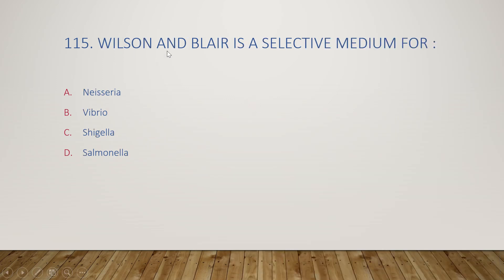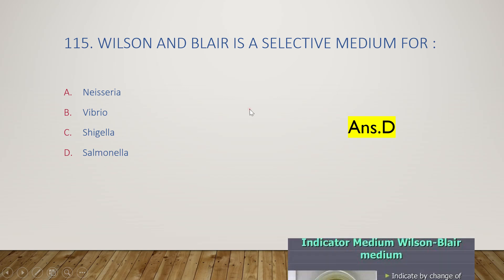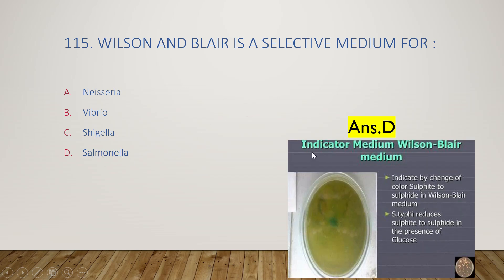Next question: Wilson and Blair medium is a selective medium for Neisseria, Vibrio, Shigella, or Salmonella? The right answer is option D, it is a selective medium for Salmonella. It is also an indicator medium where Salmonella reduces sulfite to sulfide in the presence of glucose.